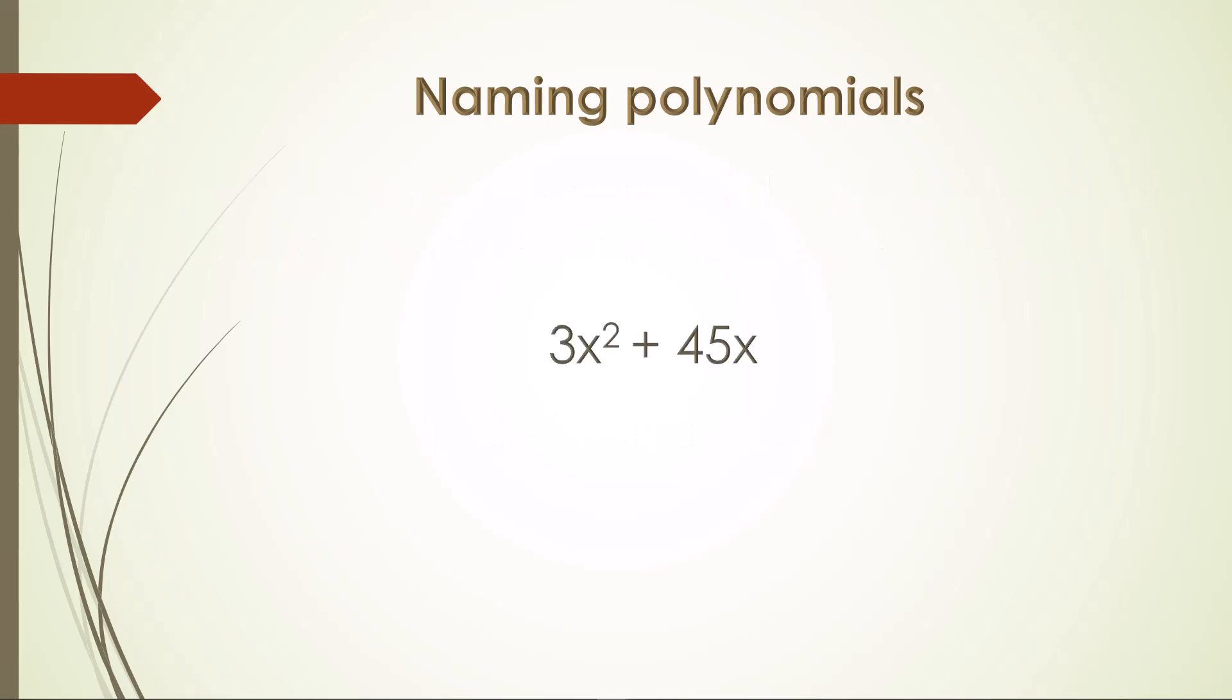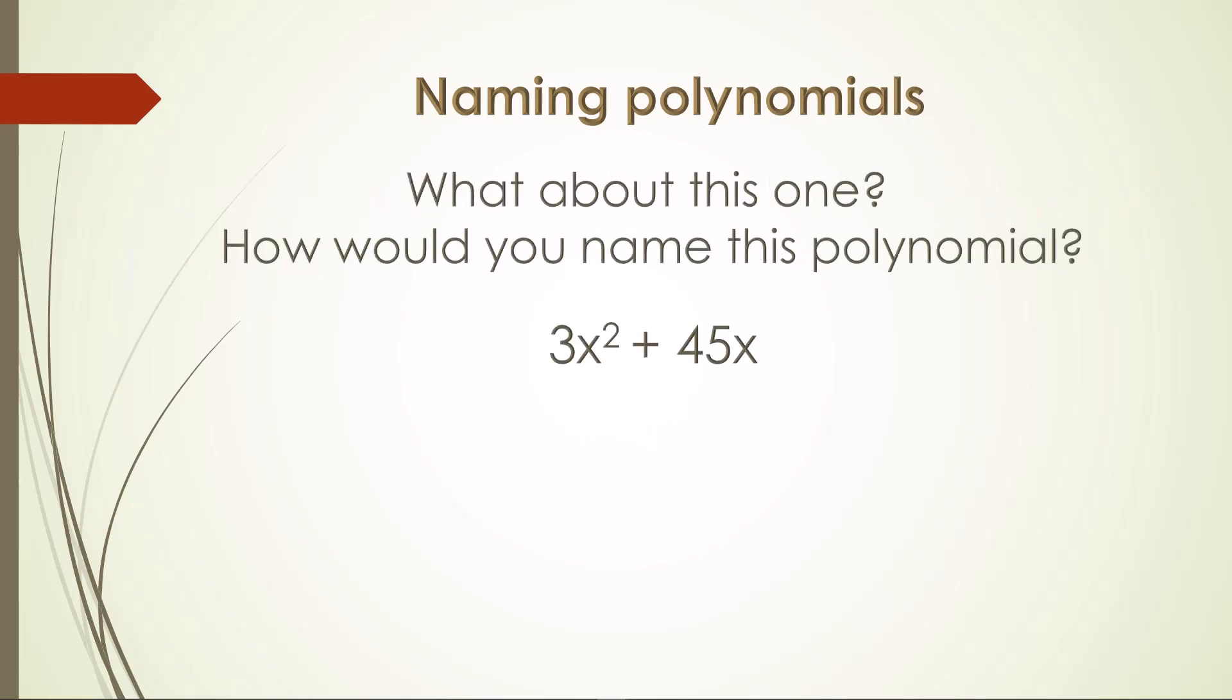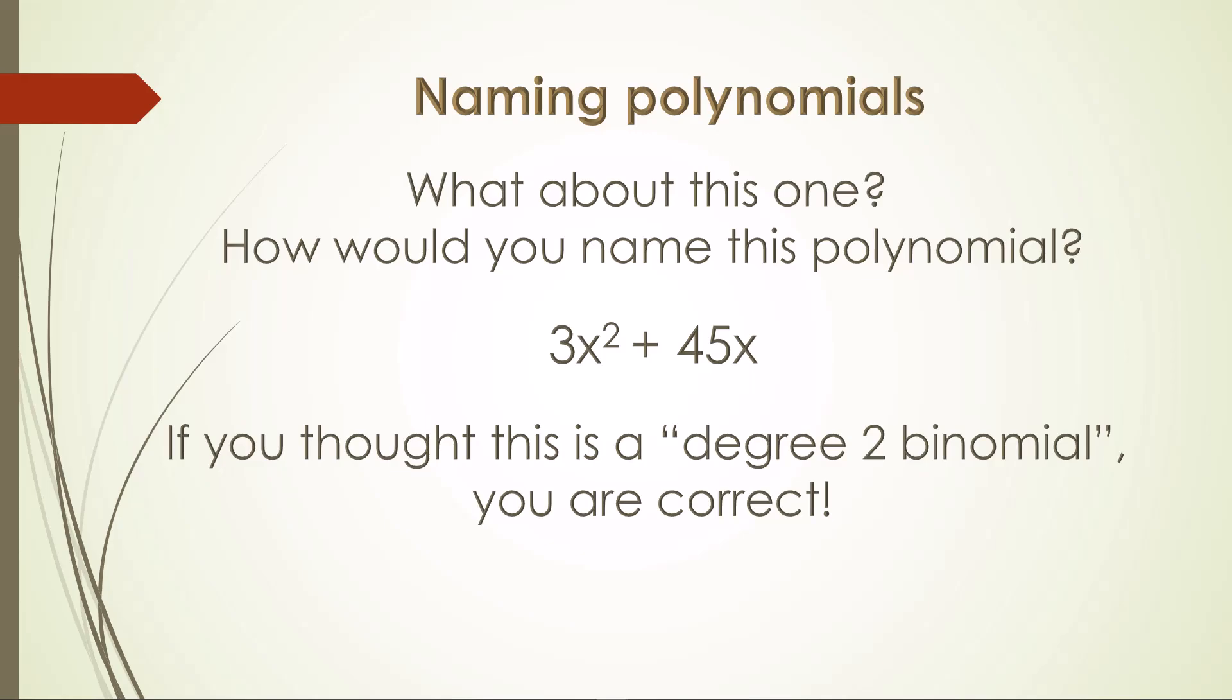What about this one? How would you name this polynomial? 3x squared plus 45x. If you thought this is a degree 2 binomial, you are correct. This one would also be a degree 2 binomial, 3x squared minus 12.